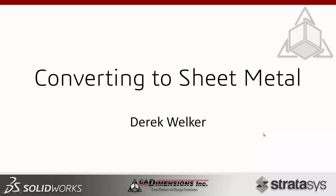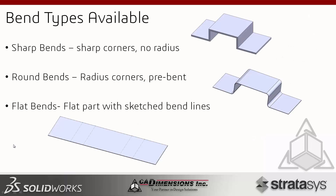The first thing we're going to talk about is the bend types available. We have sharp bends, round bends, and flat bends — these are the different bends that can come into SolidWorks. A sharp bend is going to be sharp corners with no radius. If you bring in a part with no bends at all, we can still convert it — we just add bends after the fact.